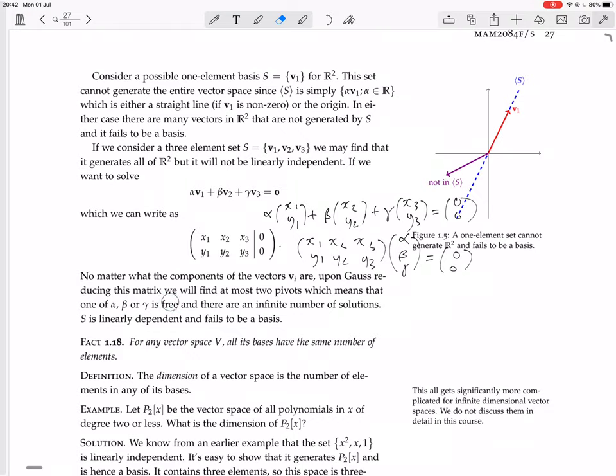So two pivots, two or less pivots, three variables, so there's a free variable, and so there are infinite number of solutions. So S is linearly dependent, because there are non-trivial solutions to this equation, and so it's not a basis.